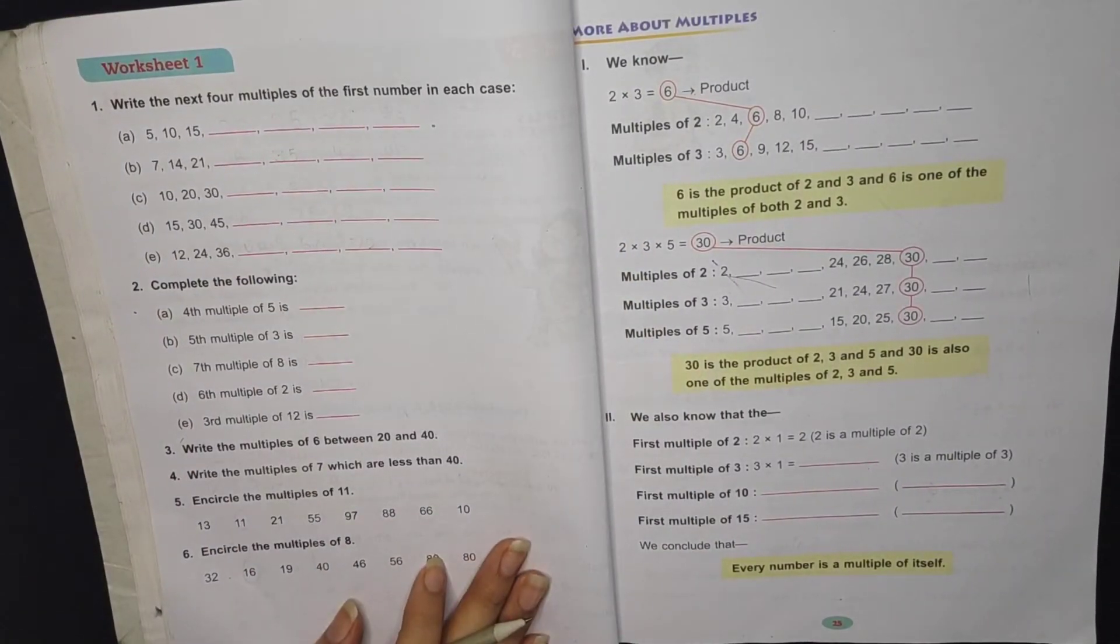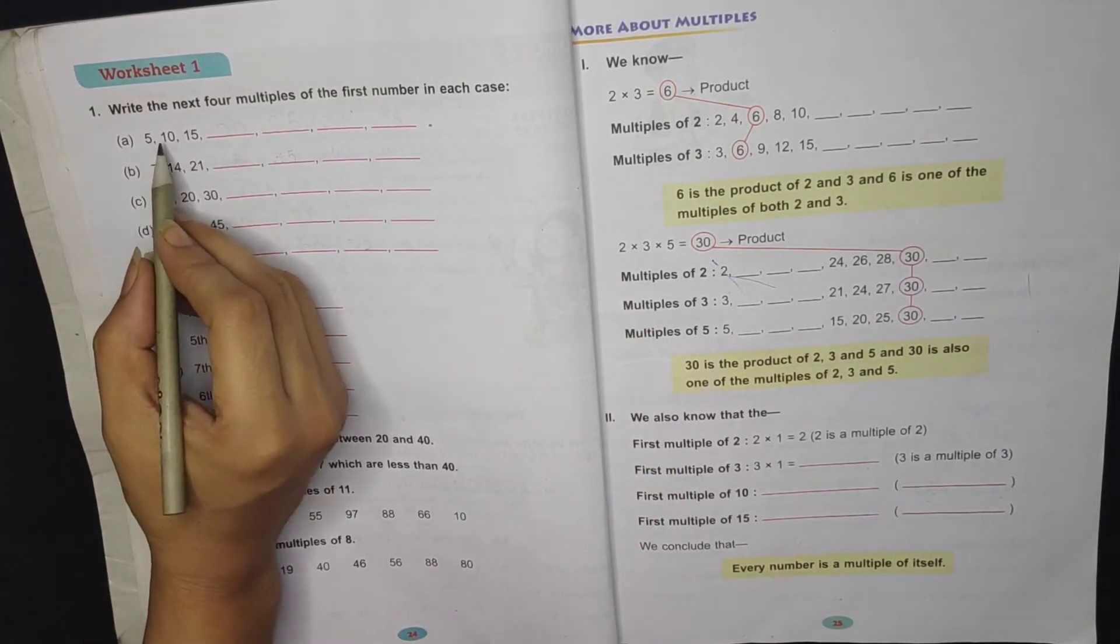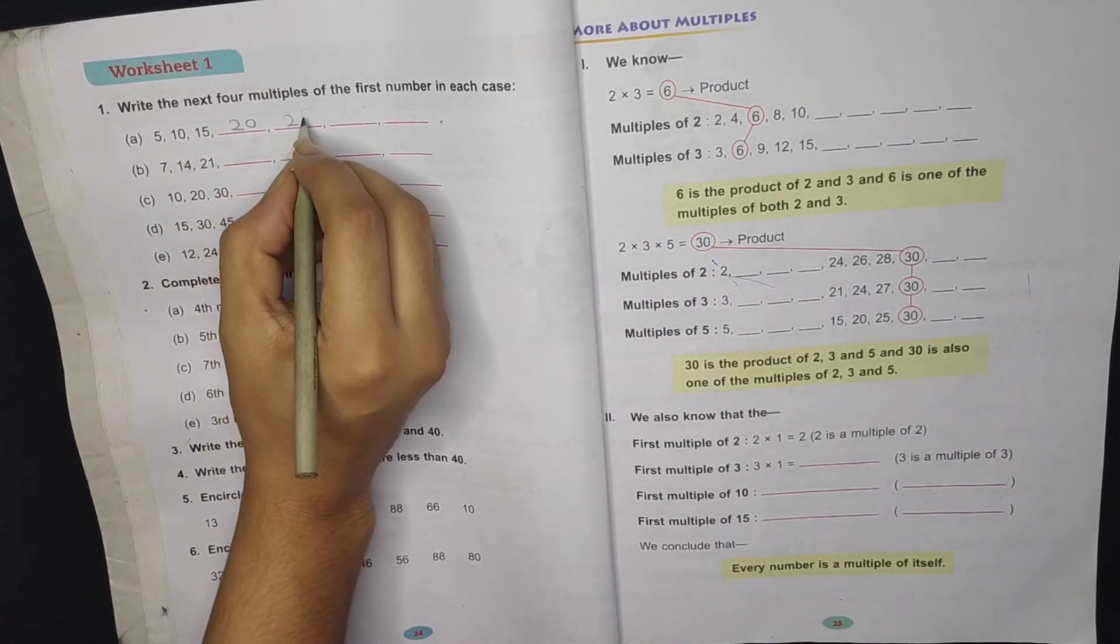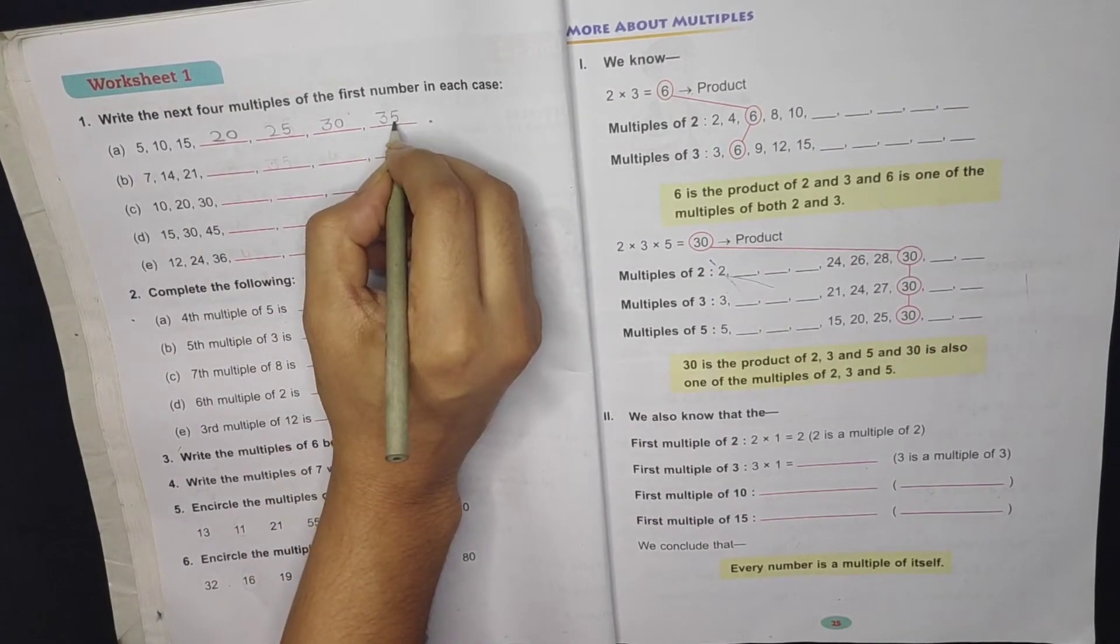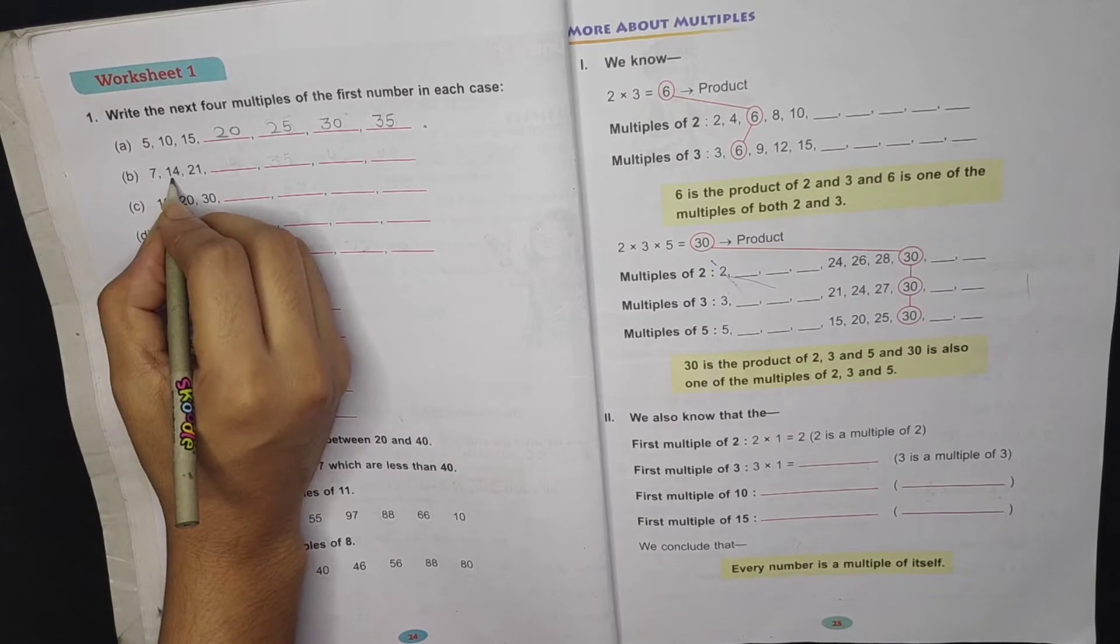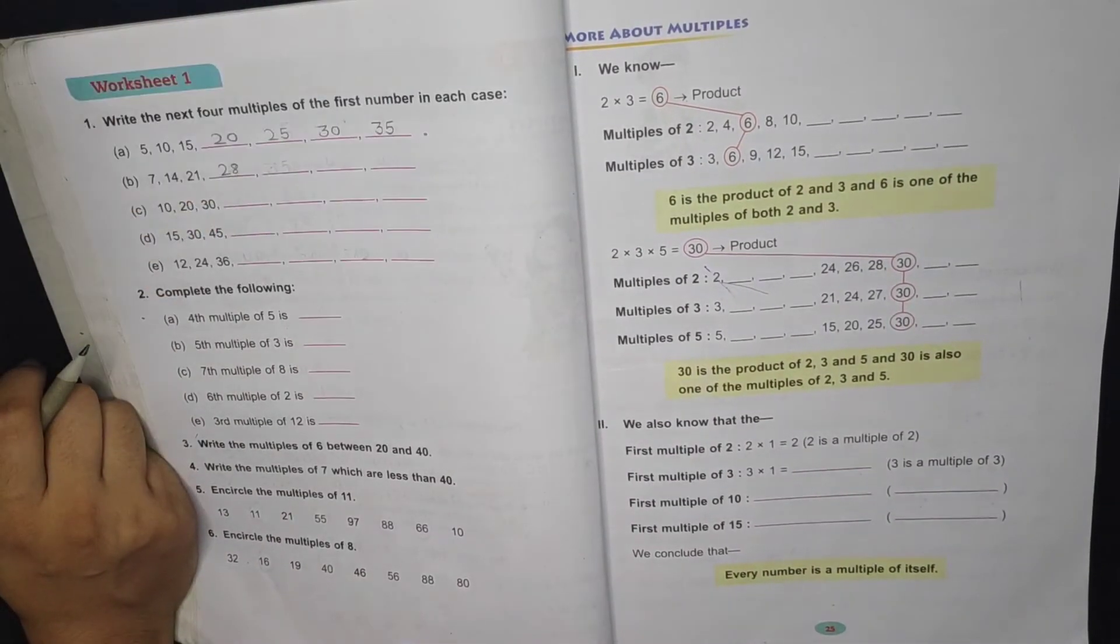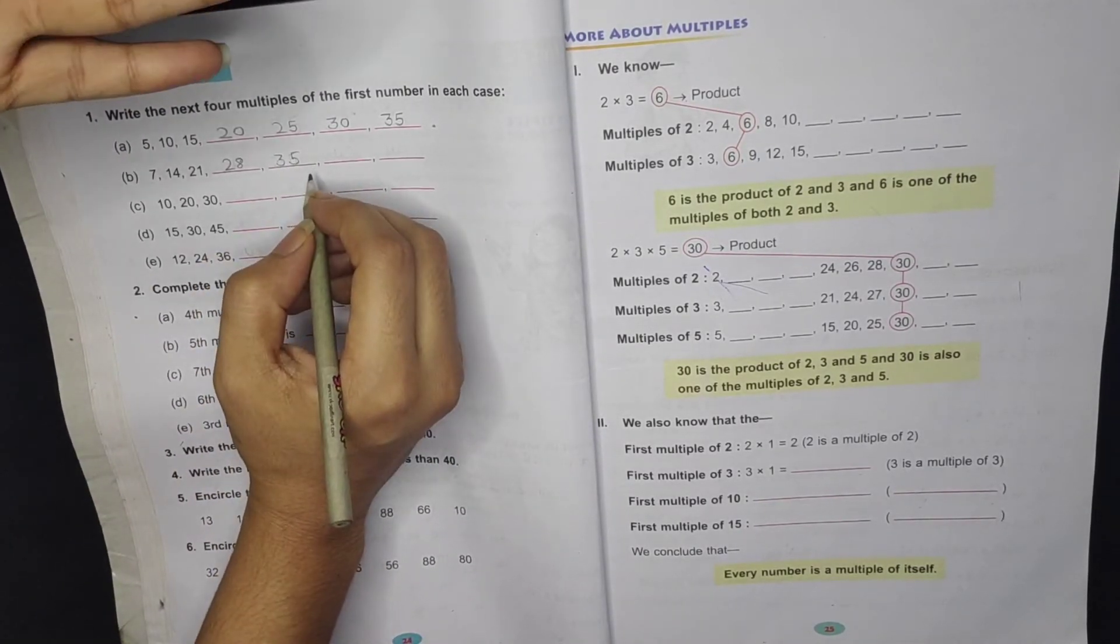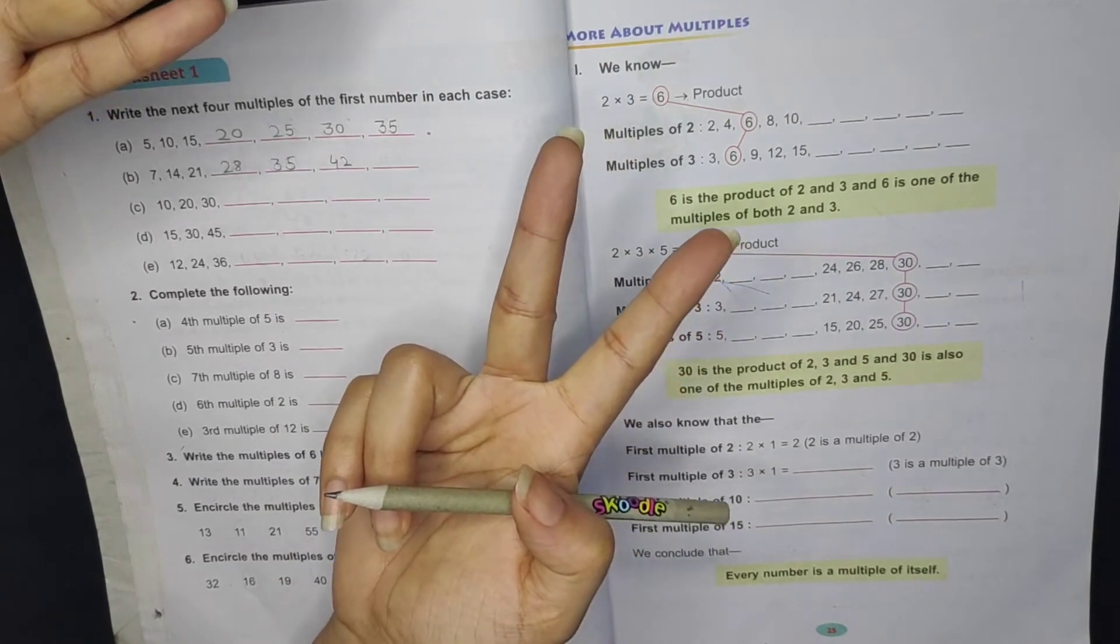Write the next 4 multiples. What do we have to write? We have to write next 4 multiples. Look, 5 table: 1 times 5 is 5, 2 times is 10, 3 times 5 is 15, 4 times it would be 20, 5 times it would be 25, 6 times it would be 30, and 7 times 5 is 35.